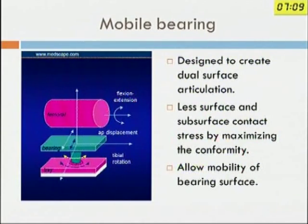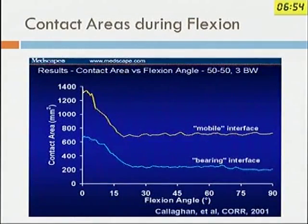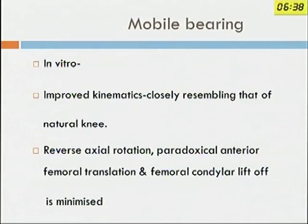The concept of mobile bearing was based on the fact that since there is a dual surface articulation, there will be less surface contact stress because it increases conformity and also allows mobility of the bearing surface. Looking at the graph, the mobile bearing interface shows a higher contact area, so the amount of stress generated is less, giving a theoretical advantage in longevity. In vitro, improved kinematics was suggested to closely resemble the natural knee — reversing paradoxical anterior femoral translation and minimizing femoral condylar lift-off.